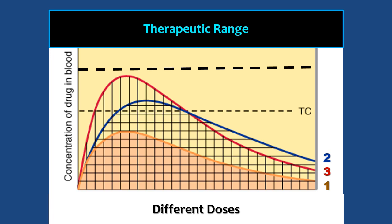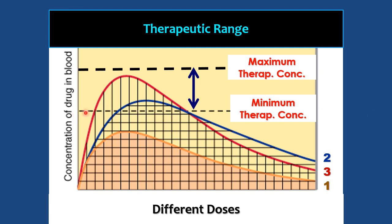Therapeutic range is the range between the minimum therapeutic concentration and the maximum therapeutic concentration. Below the minimum, there will be no therapeutic effect. Above the maximum therapeutic concentration, toxicity starts. The therapeutic window is the range between the minimum therapeutic concentration and the minimum toxic concentration — because maximum therapeutic and minimum toxic are usually just adjacent to each other.